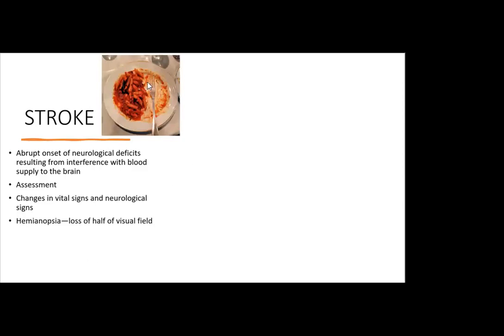You can see how a patient with stroke has only eaten one side of the plate — they've lost the visual field to the left. That's hemianopsia. It could also be homonymous hemianopsia, where there is vision loss on the same side of the visual field in both eyes.